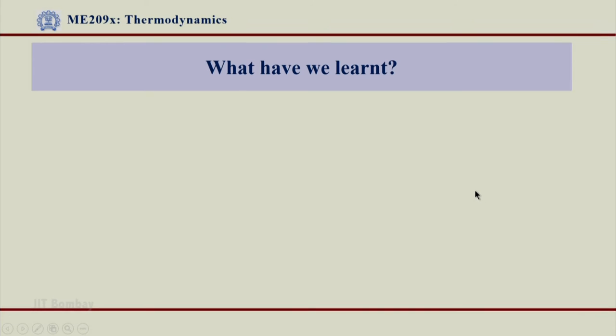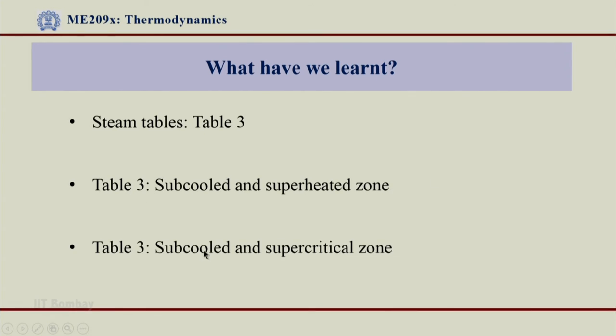So, what have we learned from this? We have seen steam tables and we have specifically seen table 3 which is meant for single phase regions. We saw subcooled and superheated zone earlier and then we saw subcooled and supercritical zone in the last slide. Thank you very much.